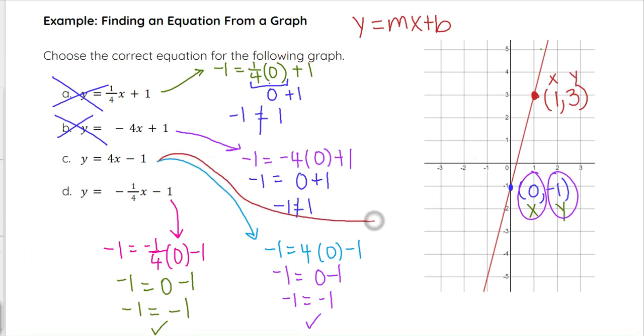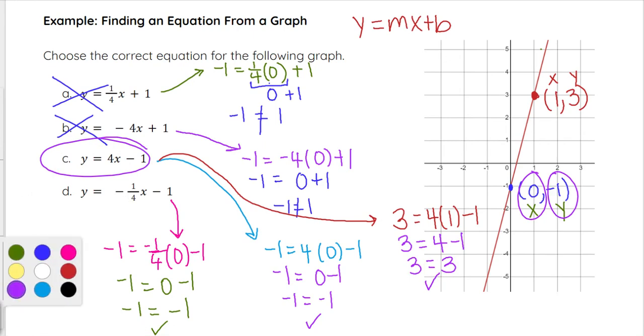Let's work with C, choice C. We have 3 equals 4 times 1 minus 1 when we plug in 1 and 3 for x and y. So we now have 3 equals 4 minus 1. 3 equals 3 is a true statement. So C should be our correct answer because there is only one line that can go through two points. If I know that both of these points that are on this line on this graph satisfy this equation, that has to be the correct equation.